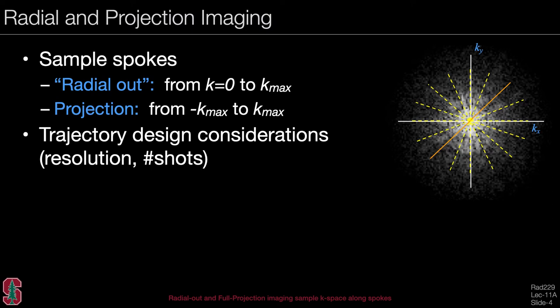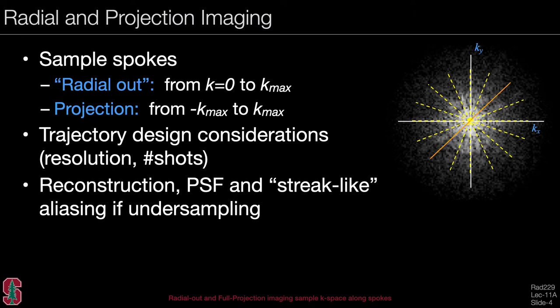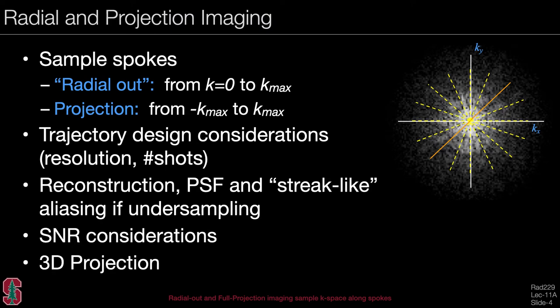We will talk about trajectory design considerations such as resolution and the number of shots or excitations. We'll discuss reconstruction, the point spread function, and streak-like aliasing when you undersample. We'll also cover signal-to-noise ratio considerations and 3D imaging techniques.